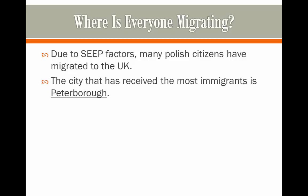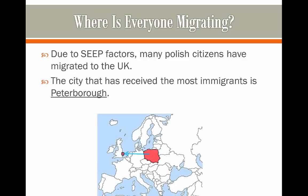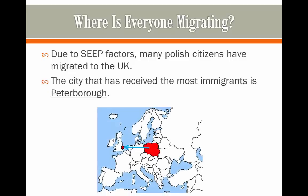The city that has been receiving the most immigrants from Poland is the city of Peterborough. We can see from this map here — which is an immigration movement map — a trip line showing a person moving from Poland towards Peterborough in the UK.